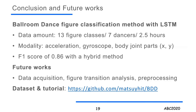Here's the conclusion. In this work, we developed a volume dance figure classification method with LSTM. The dataset was 2.5 hours, with 13 figure classes and 7 dancers. We used acceleration, gyroscope, and body joint positions, and obtained an F1 score of 0.86 with the hybrid method. From now on, we need to acquire more data, analyze figure transition rules, and develop a better preprocessing method. We have opened the dataset and introduction, which can be accessed via the link. Thank you for listening, and I'm ready to answer any questions.